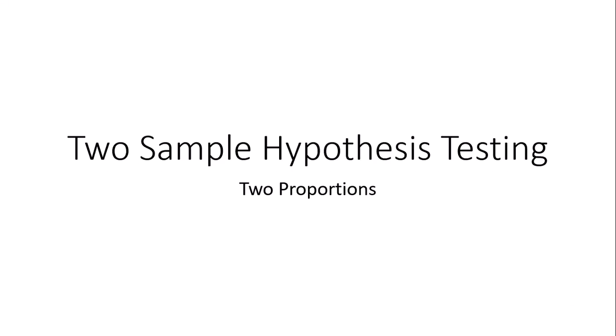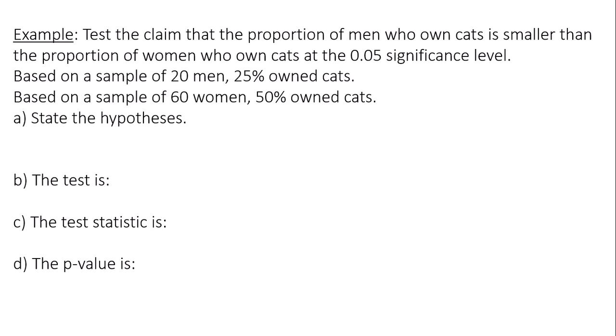This is a video on two-sample hypothesis testing comparing two proportions. Test the claim that the proportion of men who own cats is smaller than the proportion of women who own cats at the 0.05 significance level.